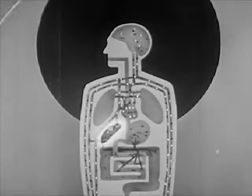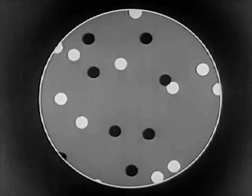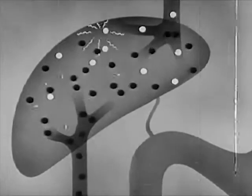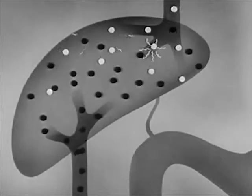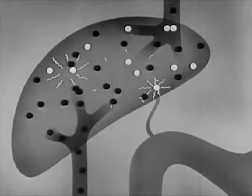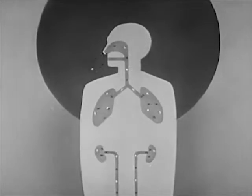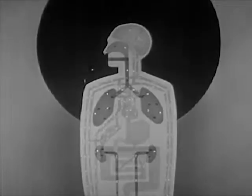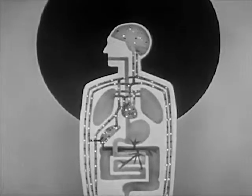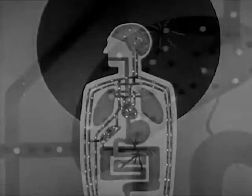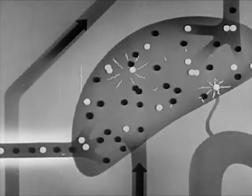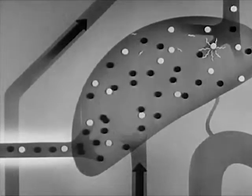Whereas only the liver oxidizes pure ethyl alcohol to acetic acid, any body tissue — for example, the tissue shown here — can oxidize acetic acid. As acetic acid, represented by the white dots, burns, heat energy is released and waste materials are eliminated. Thus the liver is the one organ of the body where oxidation of alcohol to acetic acid takes place. Except for small amounts of alcohol that escape through the lungs and kidneys, alcohol in the bloodstream remains unchanged until it can be acted upon by the liver. The liver oxidizes about three-fourths of an ounce of alcohol per hour until all the alcohol is oxidized.